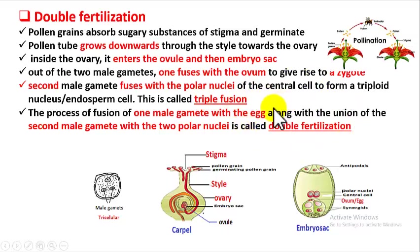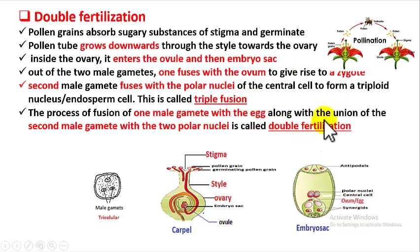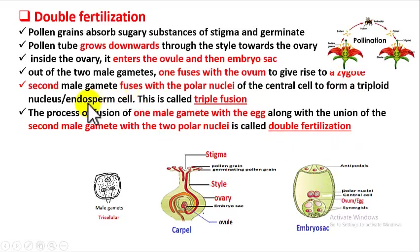So two times fusion is happening: one is between the ovum and the first male gamete, and the second is between the second male gamete and the polar nuclei — that is why it is called double fertilization. In summary: two male gametes are released; one fuses with the ovum to form a zygote, and the other fuses with the polar nuclei to form the endosperm cell.